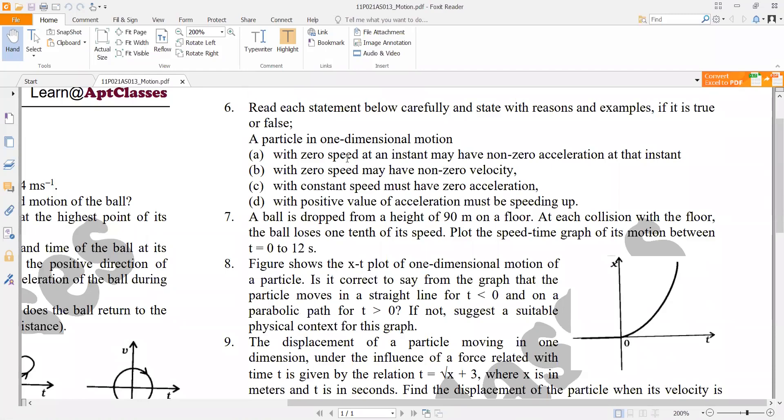Now this question says read each statement below carefully and state with reasons and examples if it is true or false. A particle in one-dimensional motion with zero speed at an instant may have non-zero acceleration at that instant.